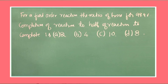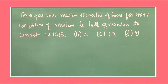For a first order reaction, the ratio of time for 99.9% completion of reaction to half life of a reaction is: A) 2, B) 4, C) 10, and D) 8. The reaction is of first order.